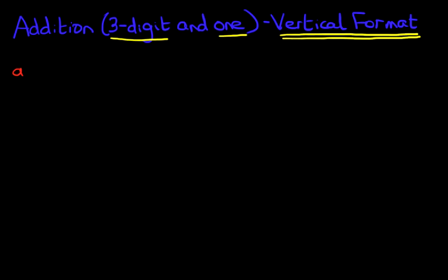Let's have a look at our first example. We've got 143 plus one. We can label the columns — we've got U for units, T for tens, and H for hundreds. Hundreds, tens, units. We've covered this before.